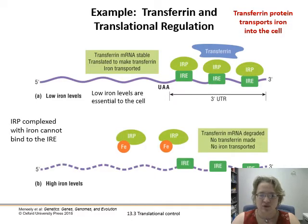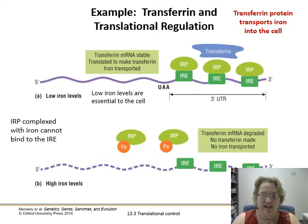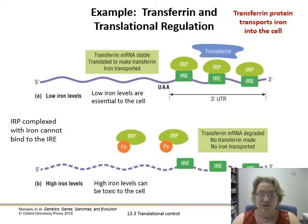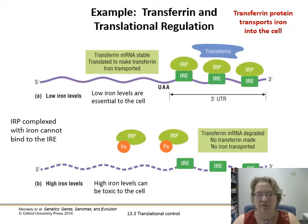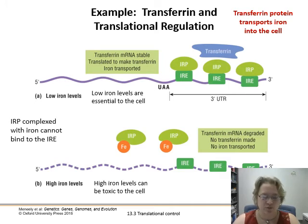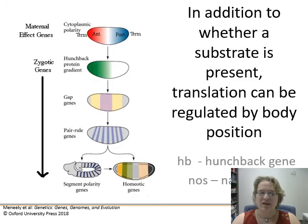Low iron levels are ideal — we don't want to make a ton of transport proteins shuttling too much iron into cells. So when iron gets too high, the iron response protein unlatches from the iron response element, grabs iron, and floats away. High iron levels are toxic to the cell, so we want to stop making transferrin. When the IRPs lift off, the IREs are no longer protected, and exonucleases chip away pac-man style at the tail end of the mRNA, degrading it. Too much iron means no more iron transport proteins.